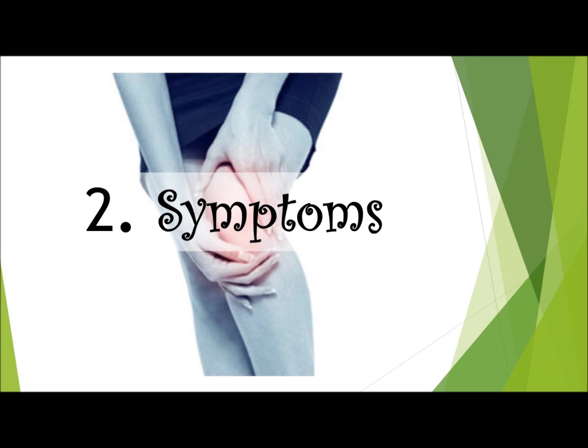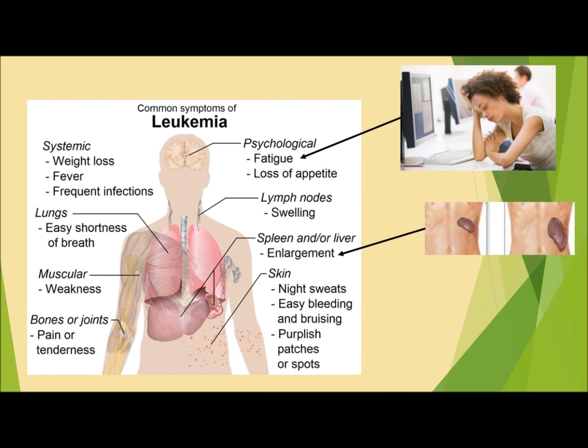Common symptoms of leukemia — Systemic: weight loss, fever, frequent infections. Lungs: easy shortness of breath. Muscular: weakness. Bones or joints: pain or tenderness. Psychological: fatigue, loss of appetite. Lymph nodes: swelling. Spleen and/or liver: enlargement. Skin: night sweats, easy bleeding and bruising, petechiae patches or spots.